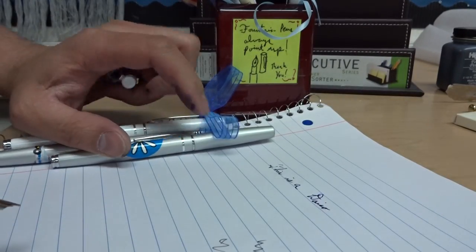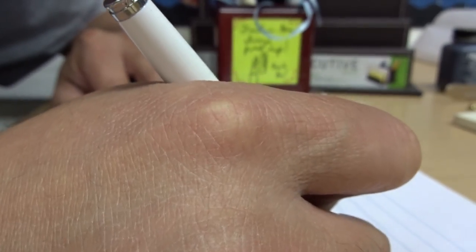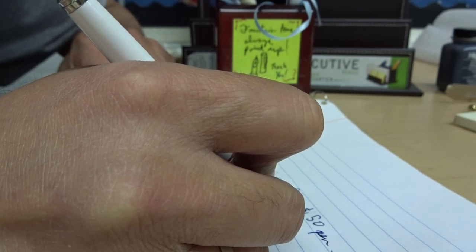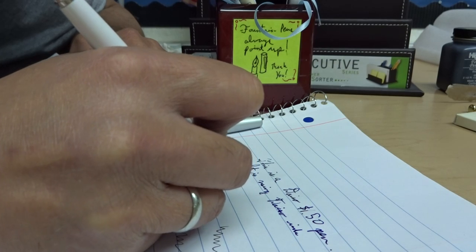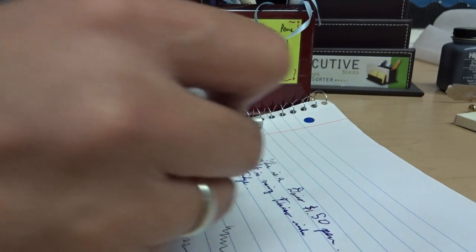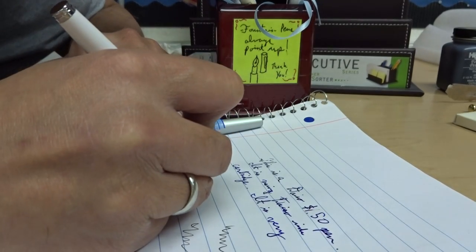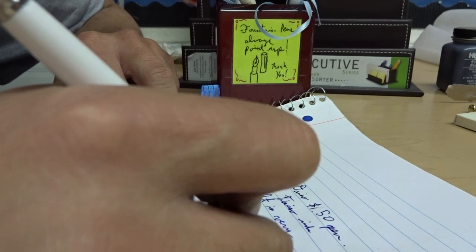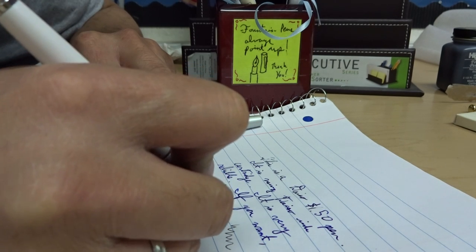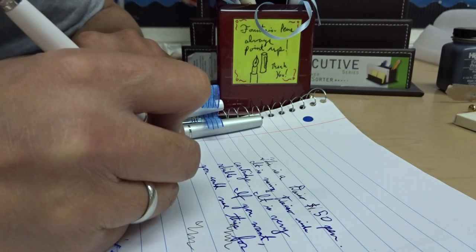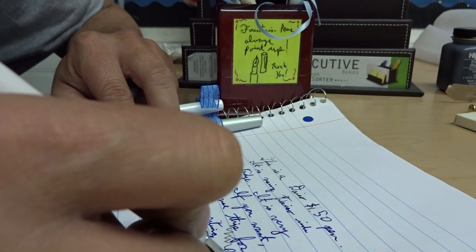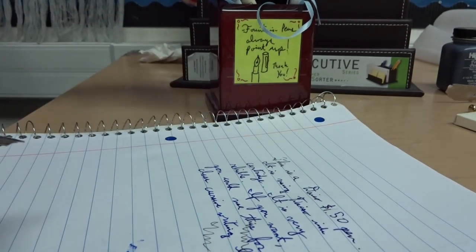So this is a Daiso $1.50 pen. It is using Daiso ink cartridge. It is very reliable if you want, you could use this for a class cursive writing lesson. That's very nice. And again, these are very reliable.